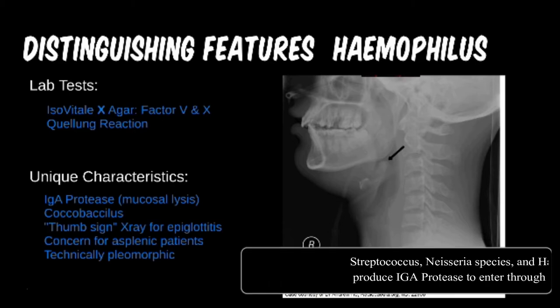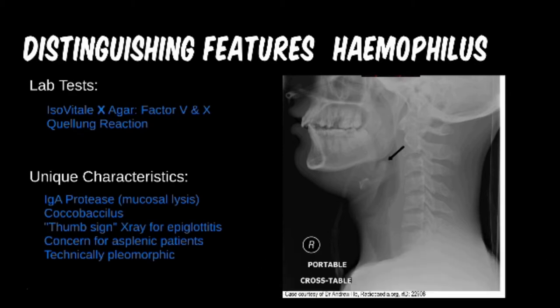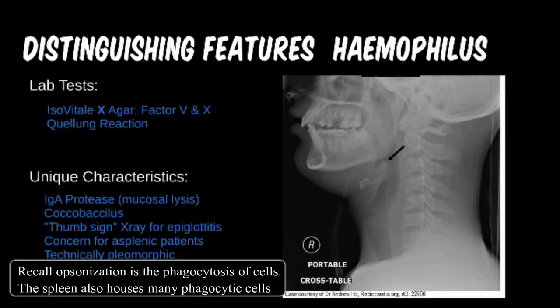If the Quellung reaction occurs with capsules, then we already know this is an encapsulated bacterium, and antibodies are an important aspect of the immune system in clearing encapsulated bacteria. For asplenic patients, they have decreased antibody production and mechanisms for opsonization, making them especially susceptible to disease.